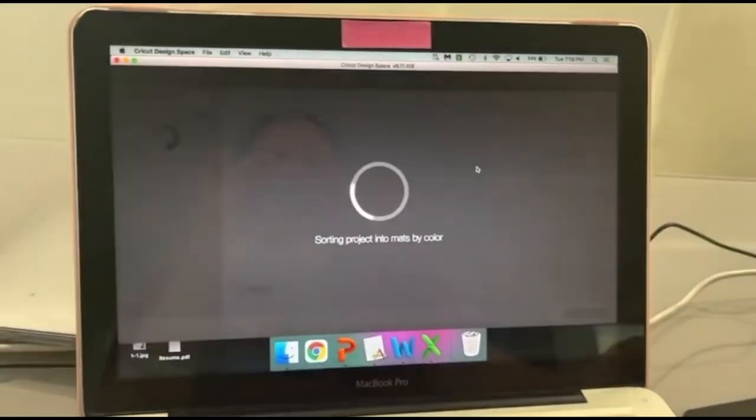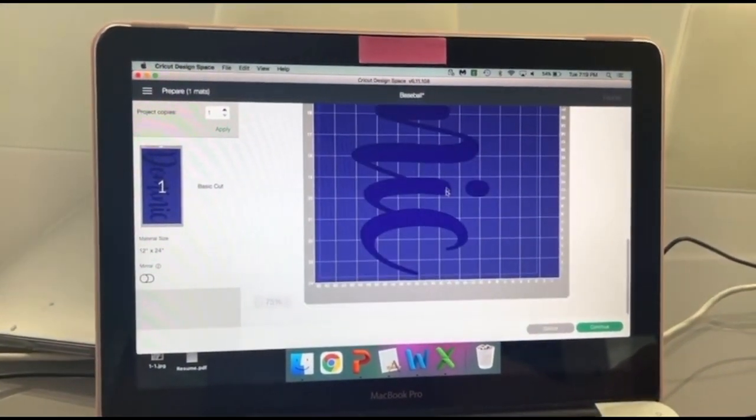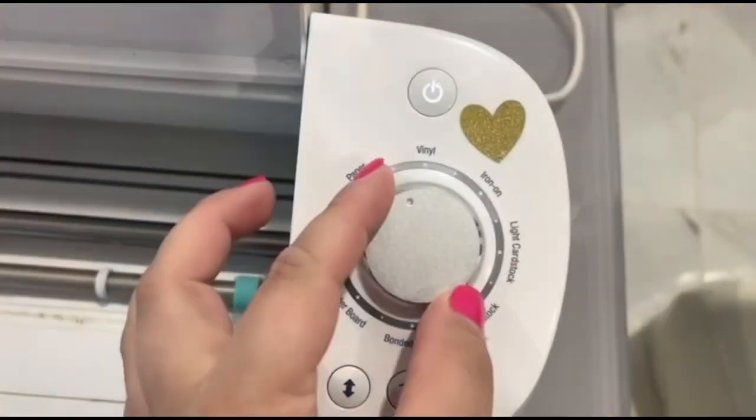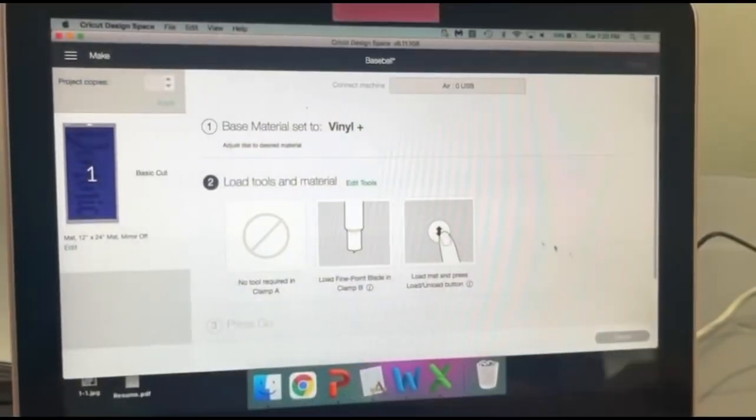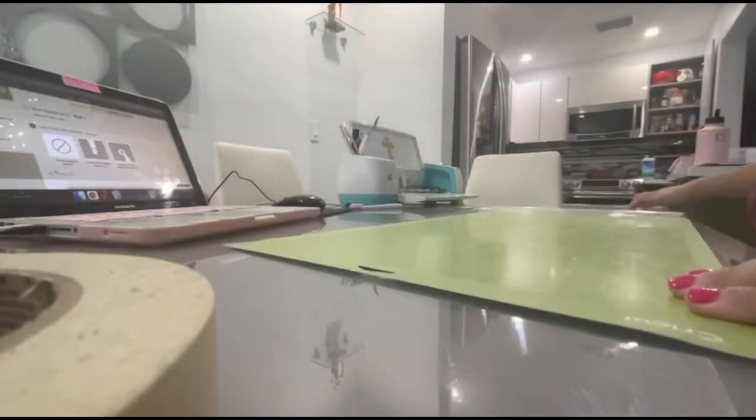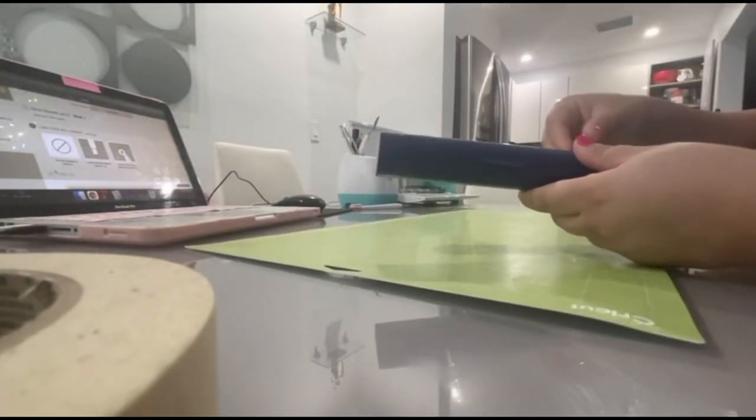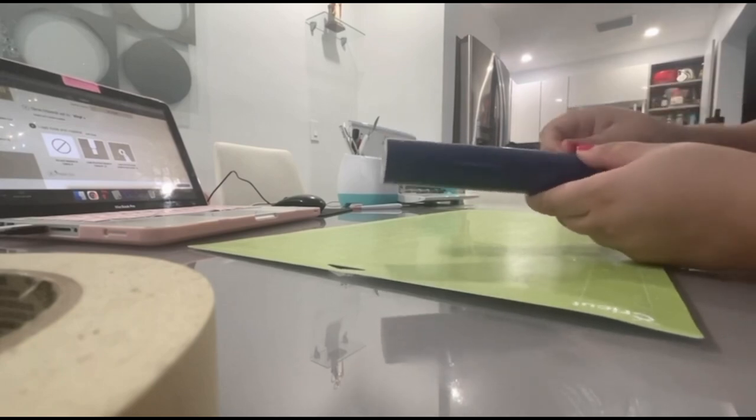After you measure the item you have, you're going to select the font you like and make sure that it's the correct size on the Cricut machine. Then you're going to cut your machine. You're going to lay all of your vinyl as straight as you can onto your cutting mat.